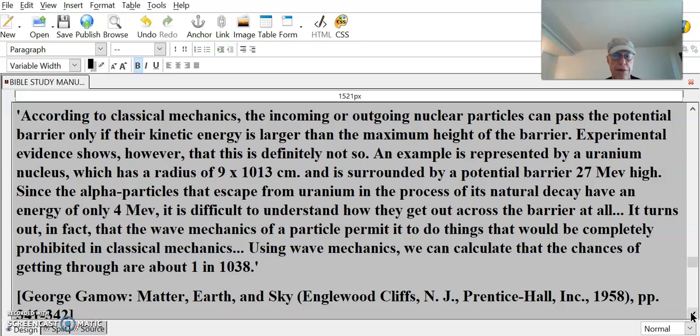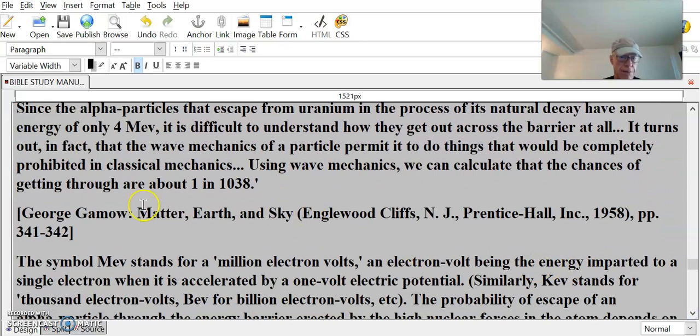Since the alpha particles that escaped from uranium in the process of its natural decay have an energy of only 4 MeV, it is difficult to understand how they get out across the barrier at all. It turns out, in fact, that the wave mechanics of a particle permit it to do things that would be completely prohibited in classical mechanics. Using wave mechanics, we can calculate that the chances of getting through are about 1 in 10^38. George Gamow.